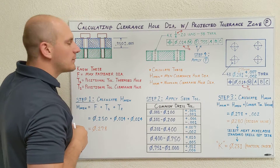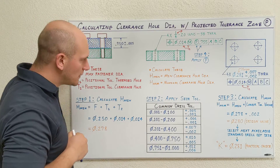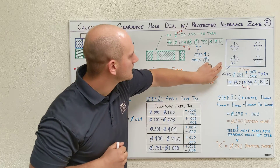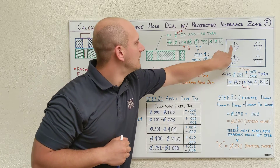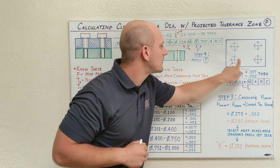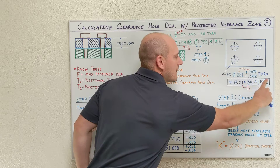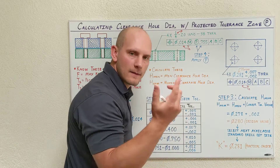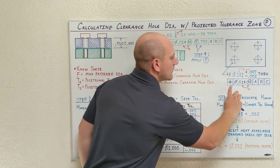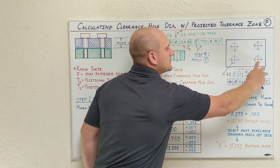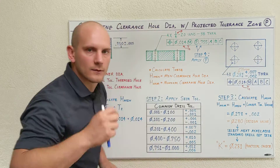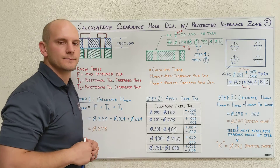For this upper plate, I'm showing that here in this top view with the plate, my clearance holes, my clearance hole call-out, and then the positional tolerance I'm using to control the locations of those clearance holes.